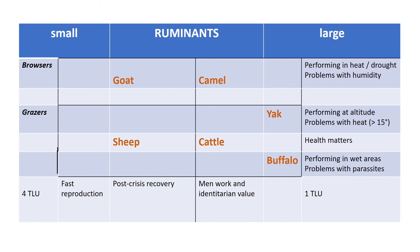For example, sheep and goats are smaller and reproduce much faster, so they play a key role after a crisis such as a drought — it is much easier and faster to recover a flock of sheep and goats than a herd of cattle or camels. Large ruminants — camel, yak, buffalo, and cattle — play a different role: they are much more valued on the market but harder to sell, and they hold significant sociopolitical and identitarian value within the pastoral system.